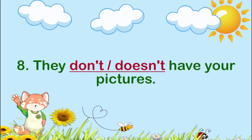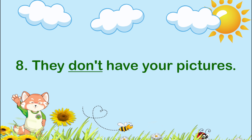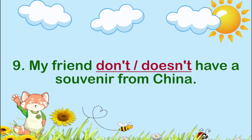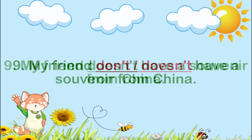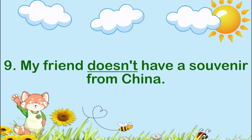Number eight: They ___ your pictures. The answer is don't have. They don't have your pictures. Number nine: My friend ___ a souvenir from China. The answer is doesn't have. My friend doesn't have a souvenir from China.